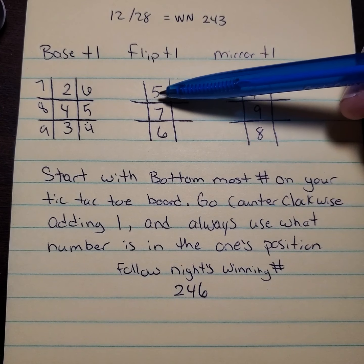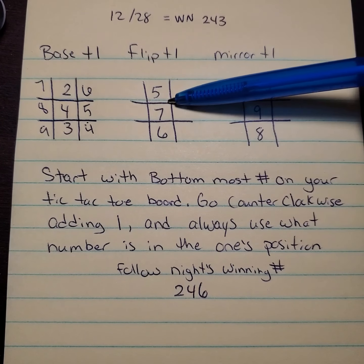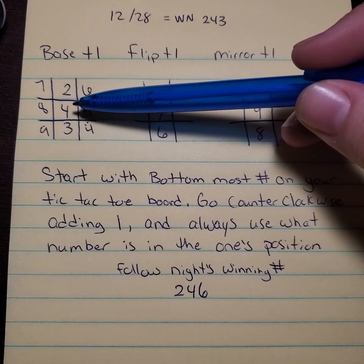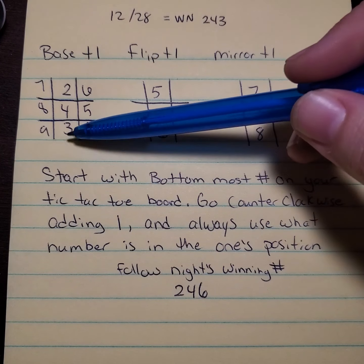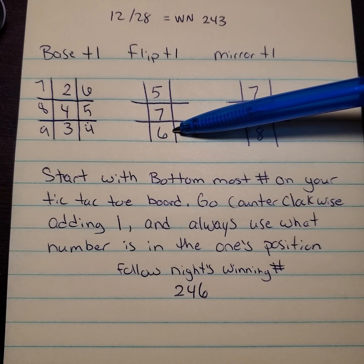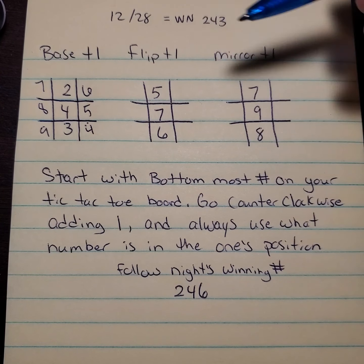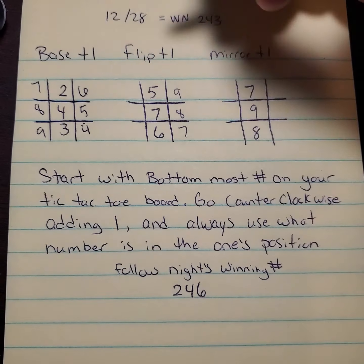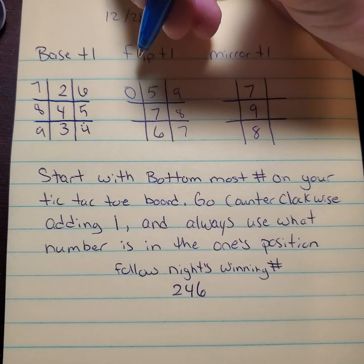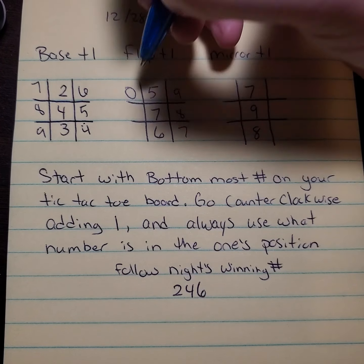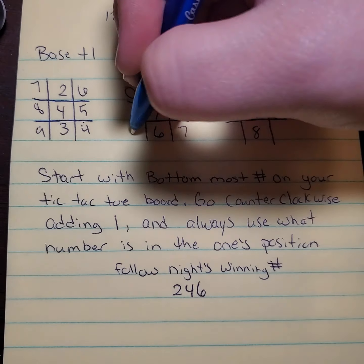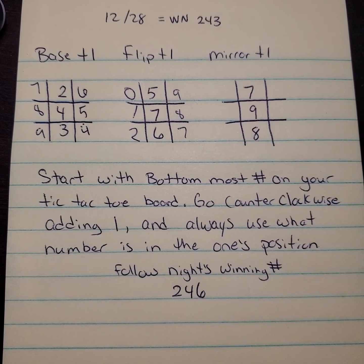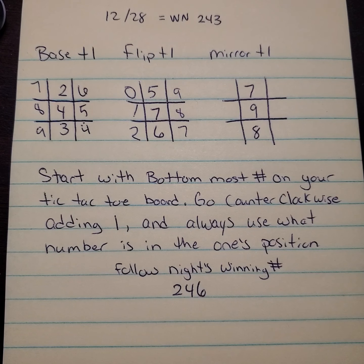For the flip tic-tac-toe, you have your 243. Adding 3 to the 2 gives you 5, adding 3 to the 4 gives you 7, and adding 3 to the 3 gives you 6. You go down the middle and then add 1, so it would be 7, 8, 9 — and then continuing across you get 10, 11, 12. Again, you only keep what's in the 1's position all the way through.